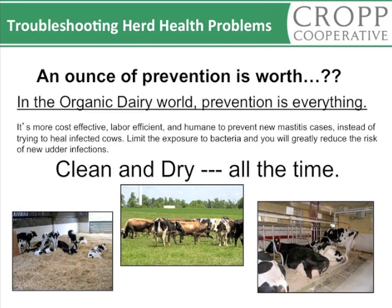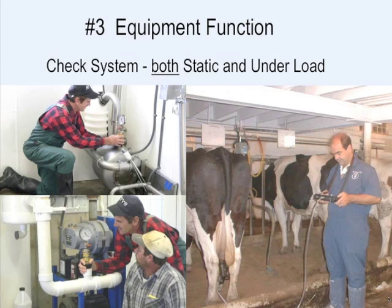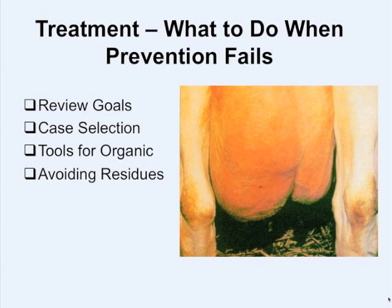For environmental mastitis, the summary is simply: keep cows clean and dry all the time. Equipment also matters — vacuum levels must be measured and pulsators checked. During milking in a stall barn with a high pipeline, the load of milk lifting changes the dynamics of the whole system. If you suspect equipment problems, get someone to measure the system during milking time.